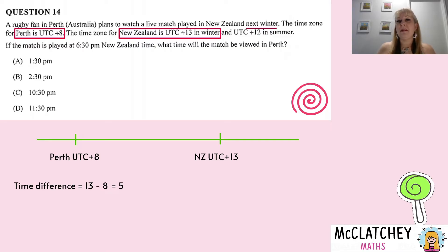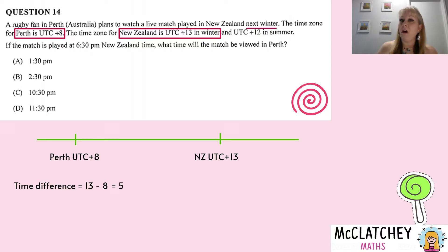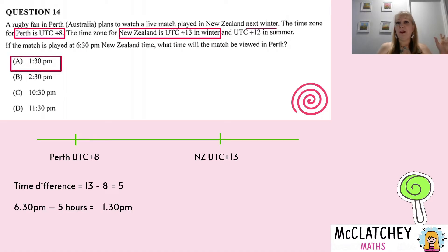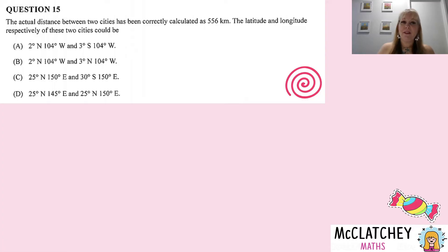The question is: what time is it in Perth when the match is being played at 6:30 pm New Zealand time? New Zealand is on the far right of the timeline, which means Perth is behind, so the match must be viewed earlier in the day than 6:30 pm. We can already eliminate two options that are after 6:30 pm. Taking the five hours away from 6:30 pm gives us 1:30 pm — that's option A.